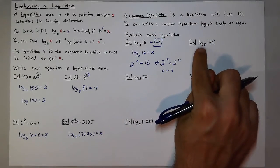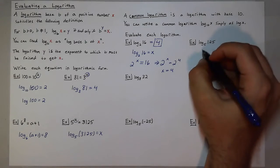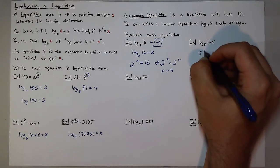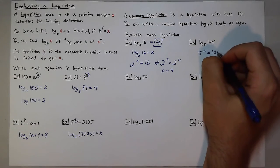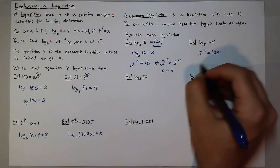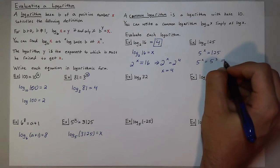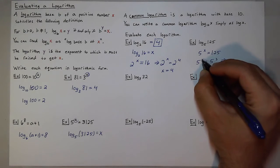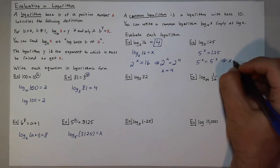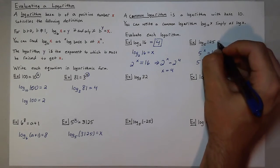So if you ask yourself, what power do you raise 5 to to get 125? Your question becomes 5 to what power is 125? Well, 125 is also known as 5 to the 3rd power. So since the bases match and they're equal, the powers must be equal to each other. So x equals 3. So that power you're trying to raise the log to is 3.